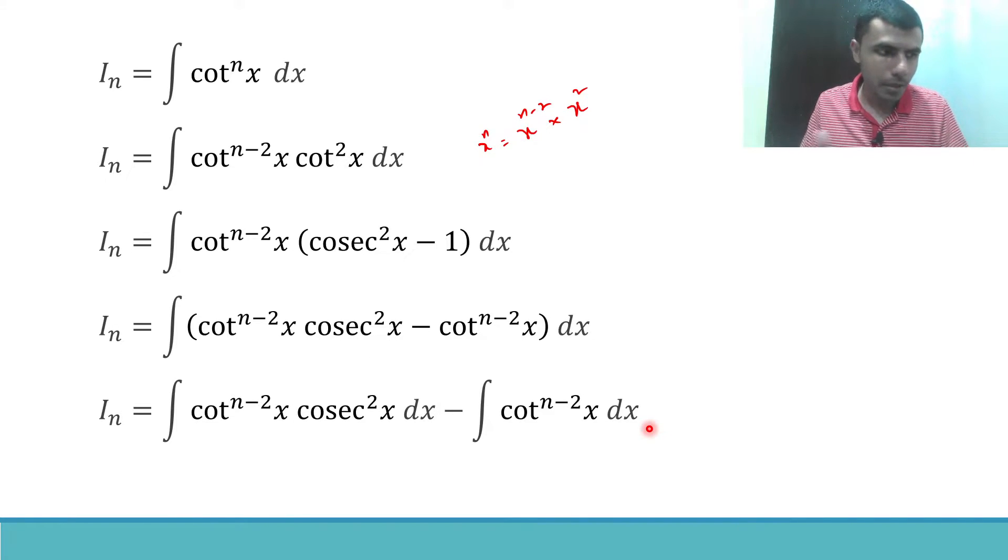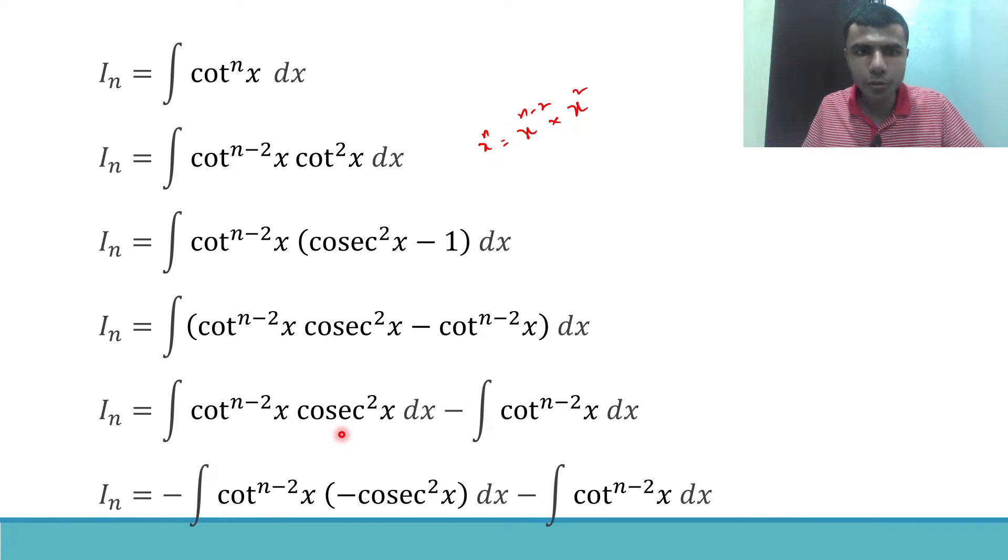Now this one is like cosecant square x. I am going to write it like minus. There is a minus outside. I put a minus outside. This cosecant square x I am writing it as minus cosecant square x and I have put it in brackets. So this minus into this minus will be plus.